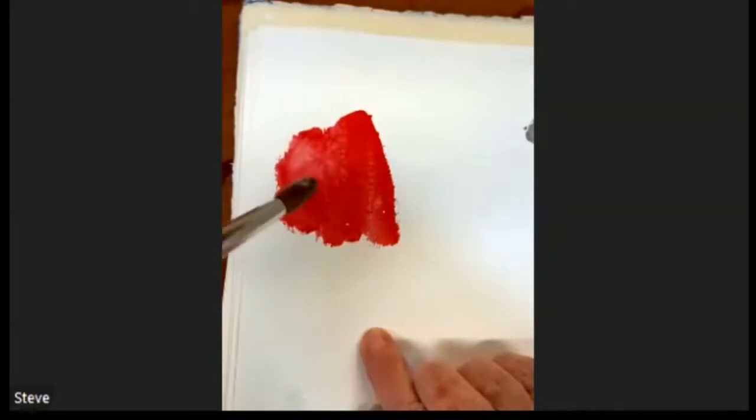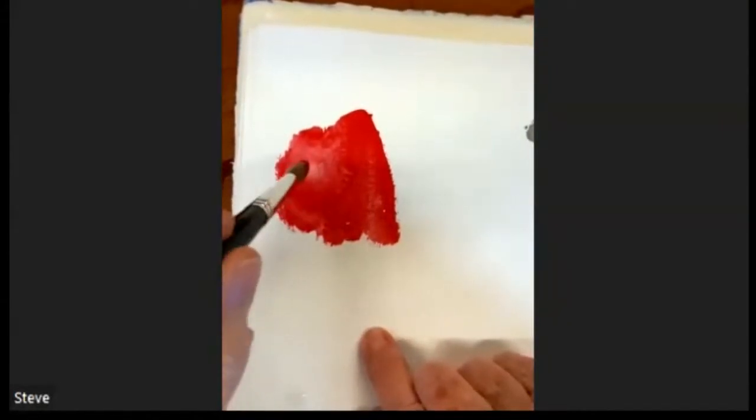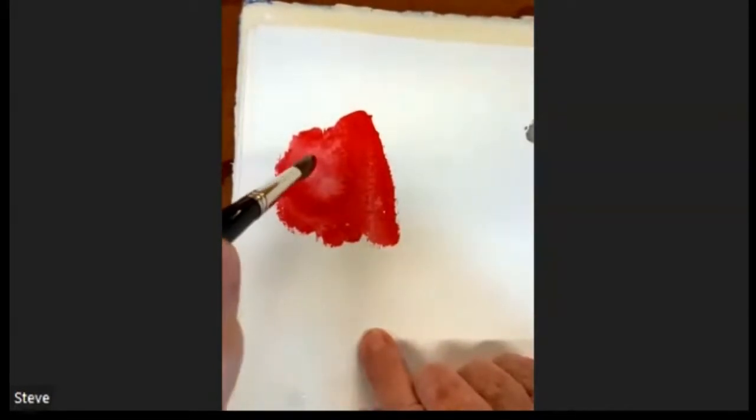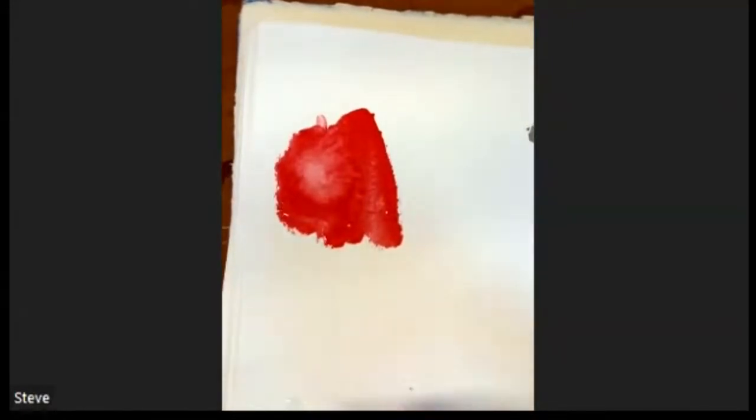You can see what it's doing is driving the paint to the edge and the middle where you're dropping it is getting whiter and cleaner. Now what you've done is produce a cauliflower.